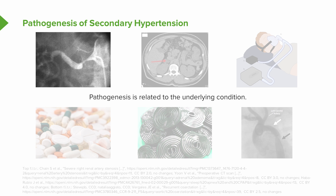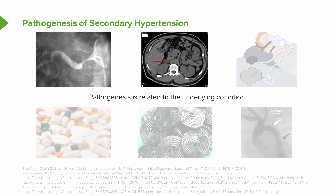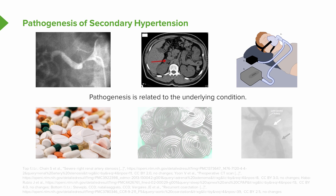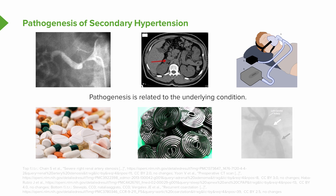Secondary hypertension is due to things like renal vascular disease, a functioning adrenal adenoma, sleep disordered breathing, medications — either iatrogenic or illicit substances — things like black licorice, typically European, and coarctation of the aorta.